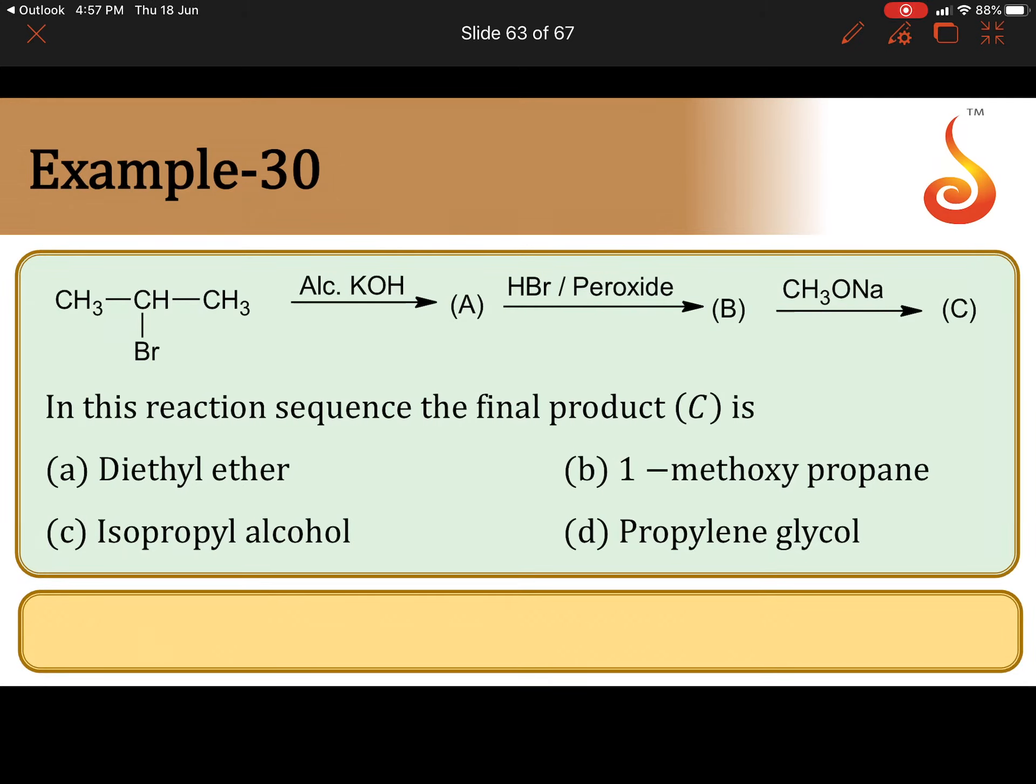Isopropyl bromide on heating with alcoholic KOH gives alkene. Dehydrobromination takes place. HBr is removed.